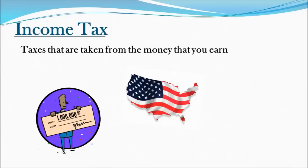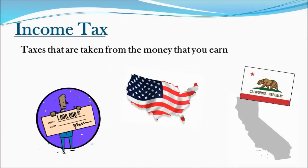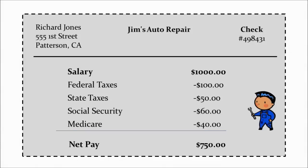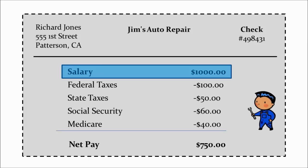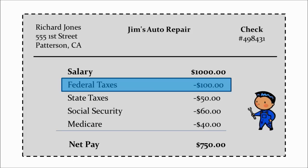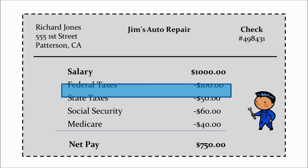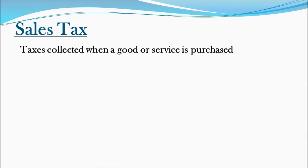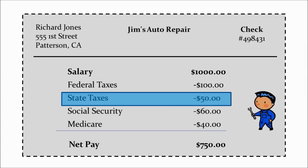The first form is the federal income tax, which everybody has to pay — it applies to every state because it's a federal statute. The second is a state income tax, which applies only to states that have chosen to have one. There are seven states without an income tax: Alaska, Florida, Nevada, South Dakota, Texas, Washington, and Wyoming. To see what income tax looks like, check a pay stub. For example, on a $1,000 paycheck, the federal government took $100 and the state of California took $50, leaving $750.